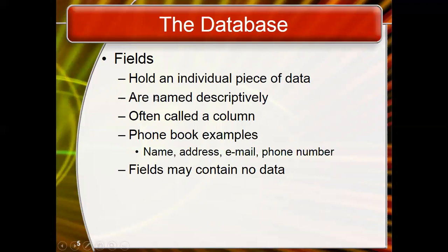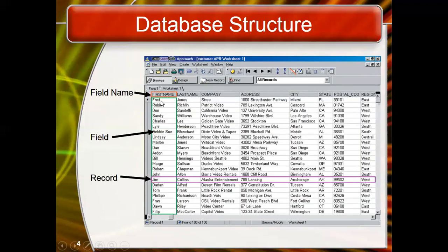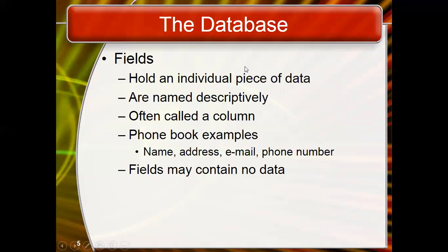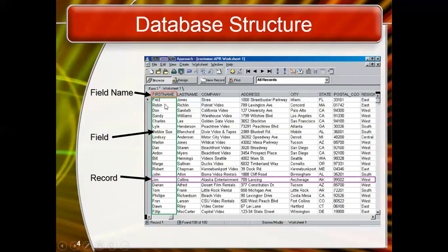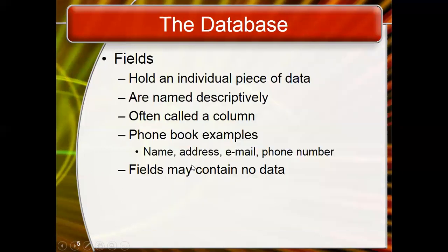The basic unit of the database is a field that holds the individual piece of data. A field stores data for a specific person — for example, 'Jones' is related to the last name field, not the first name field. A field is a basic unit of a database which holds an individual piece of data — that may be a number, text, image, or anything. It is mostly called a column. Fields are shown to you in columns and records are shown to you in rows.